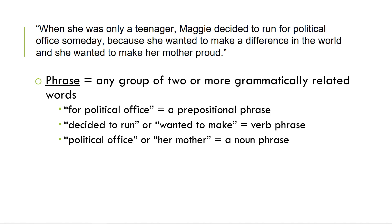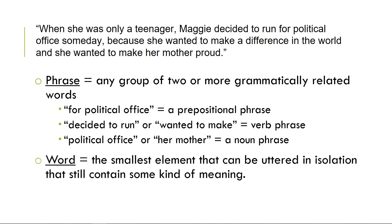Going back to our sentence: the next smallest unit in a sentence is a phrase, which is any group of grammatically related words. 'Alcibiades and Menithius' was a noun phrase; 'for political office' is a prepositional phrase; 'decided to run' and 'wanted to make' are verb phrases; 'her mother' and 'political office' are noun phrases. And of course the smallest unit is a word — the smallest element that can be uttered in isolation and still have meaning.